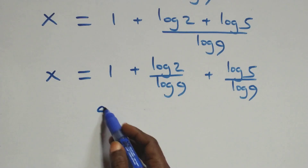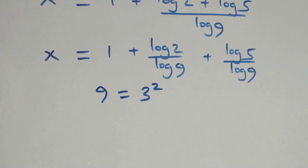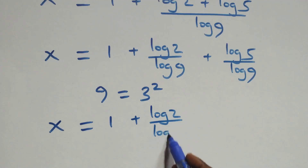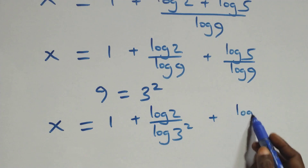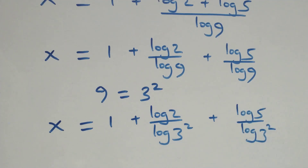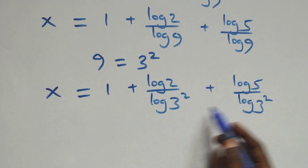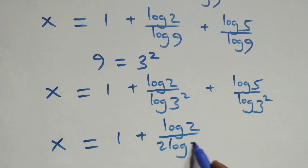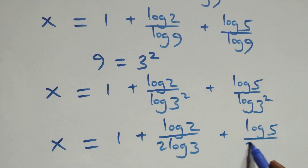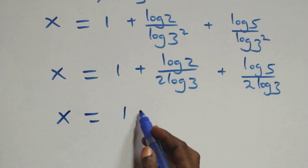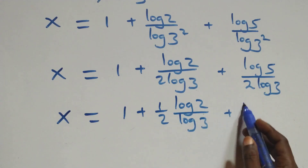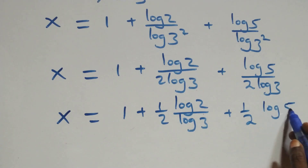Also here, 9 can be written as 3 times 3, that's 3 squared. What we have becomes x equals to 1 plus log 2 over log 3 squared. We apply the power rule of logarithm — the 2 comes down — and we have x equals to 1 plus log 2 over 2 log 3, plus log 5 over 2 log 3. We can write this as x equals to 1 plus one-half times log 2 over log 3, plus one-half times log 5 over log 3.